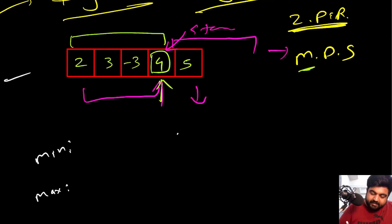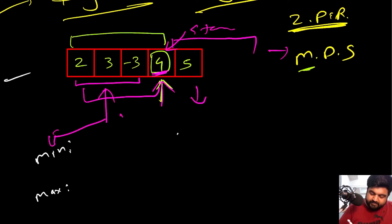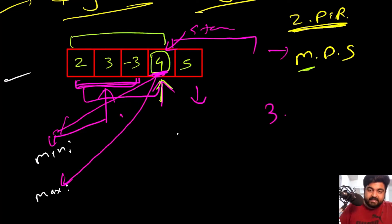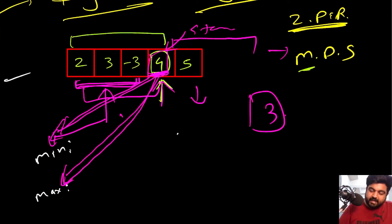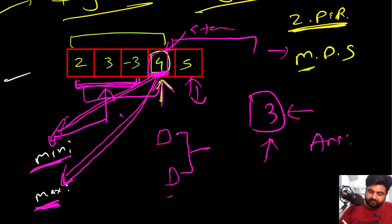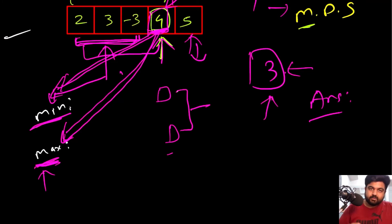At any given position, we check three things: multiply the current value with the previous minimum, multiply it with the previous maximum, and compare the current value by itself. From these three candidates we store the new minimum and the new maximum. We also maintain a variable called answer, and whenever we identify a better maximum value we update it. By the end of the loop we will have the maximum product subarray stored in answer.